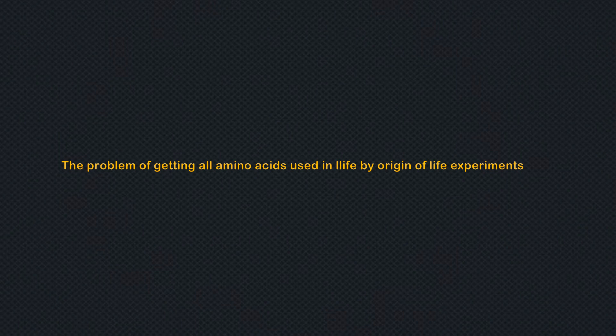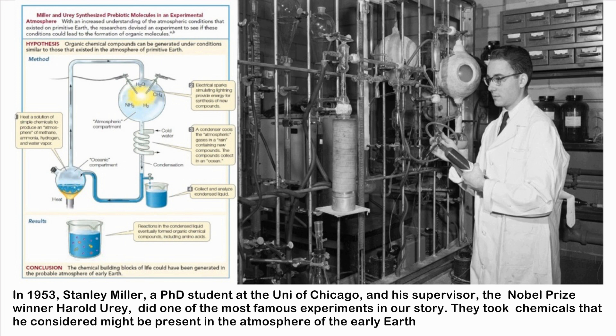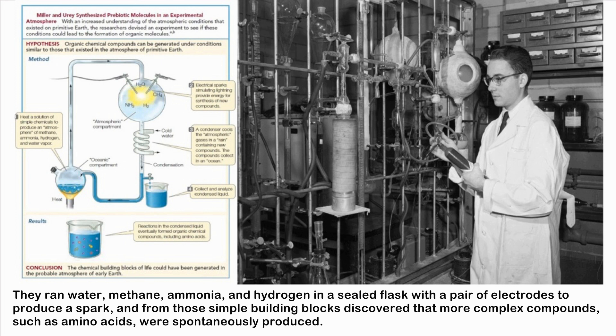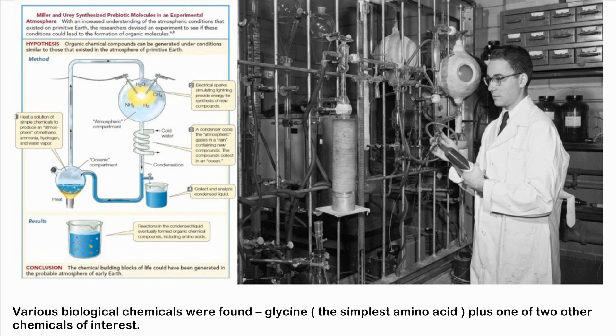In 1953, Stanley Miller, a PhD student at the University of Chicago, and his supervisor, Nobel Prize winner Harold Urey, conducted one of the most famous experiments in this story. They took chemicals considered to be present in the atmosphere of the early Earth — water, methane, ammonia, and hydrogen — in a sealed flask with electrodes to produce a spark, and discovered that more complex compounds such as amino acids were spontaneously produced.